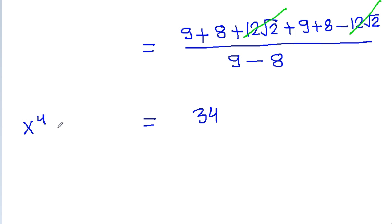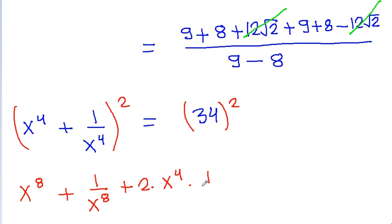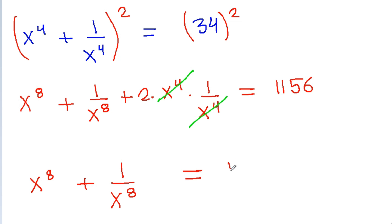Now if we square both sides, we get x power 8 plus 1 by x power 8 plus 2 times x power 4 times 1 by x power 4 is equal to 34 squared, which is 1156. The x power 4 and 1 by x power 4 cancel, and we get x power 8 plus 1 by x power 8 is equal to 1156 minus 2, which is 1154. So 1154 is the required answer.